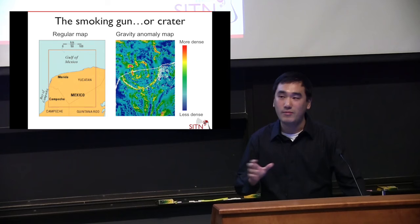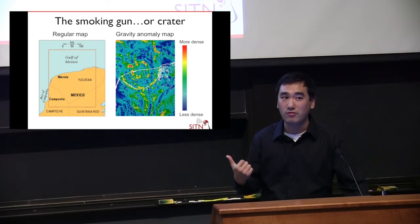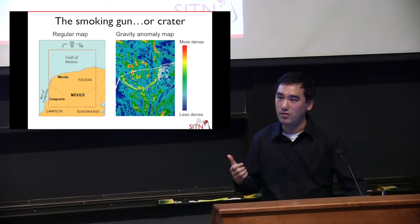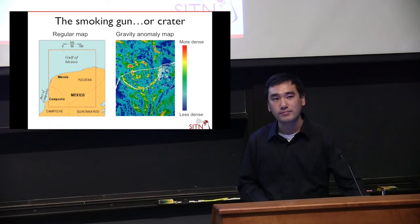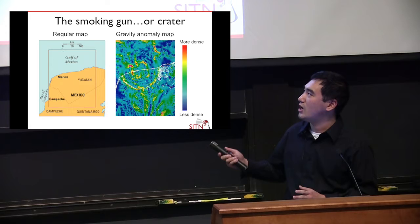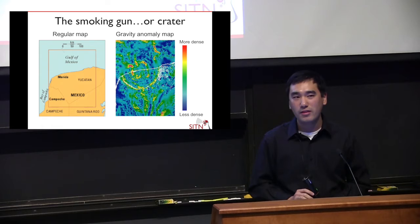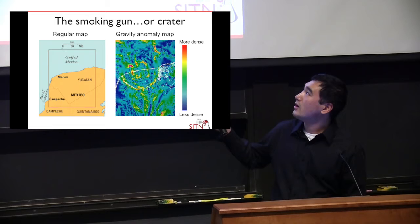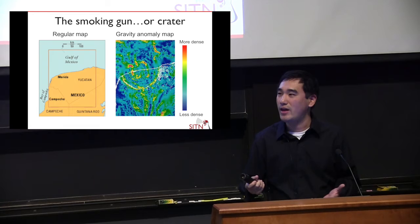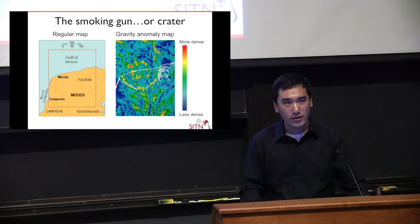His findings were published but didn't reach Walter and Luis Alvarez until about 20 years later — it took that long for the dots to finally be connected. But once that association was made, researchers were able to take samples from this area and confirm that the crater really is about 65 million years old, about the same age as the iridium samples found worldwide, and about the same time the dinosaurs went extinct. The crater is 180 kilometers in diameter. For scale, here's Cuba, here's Florida, Louisiana, and Texas — it's a pretty big impact crater.